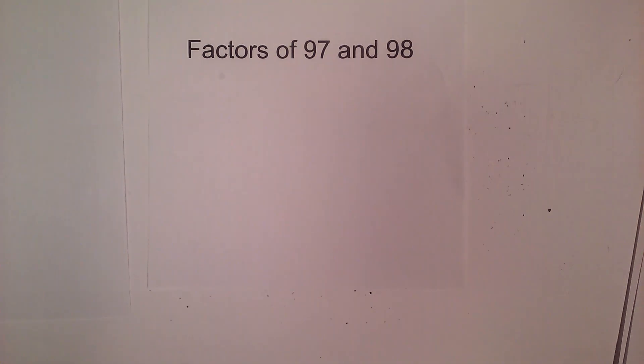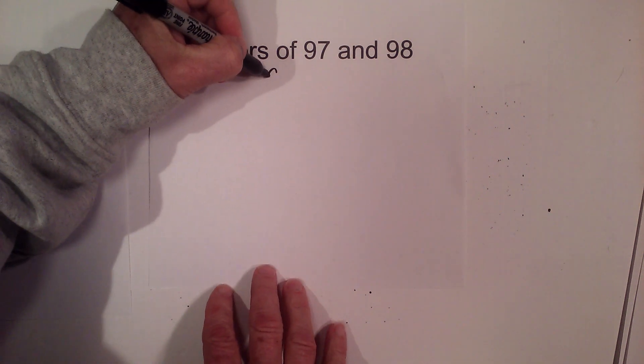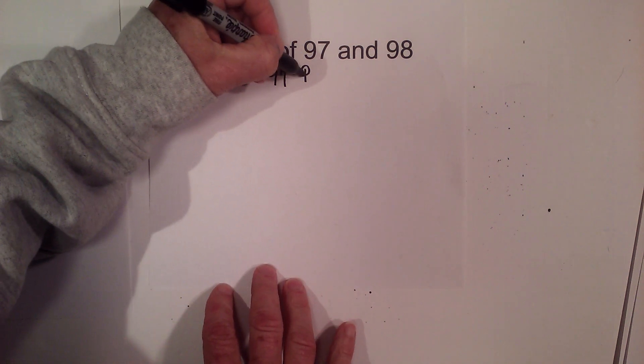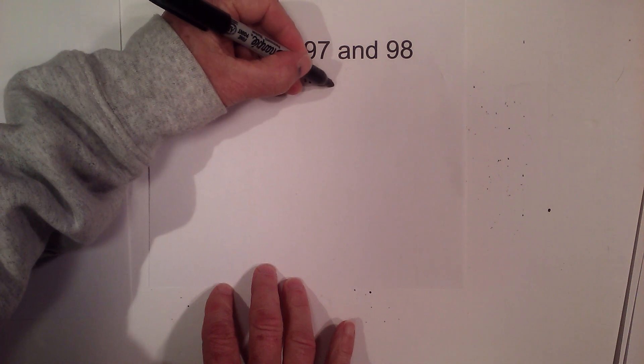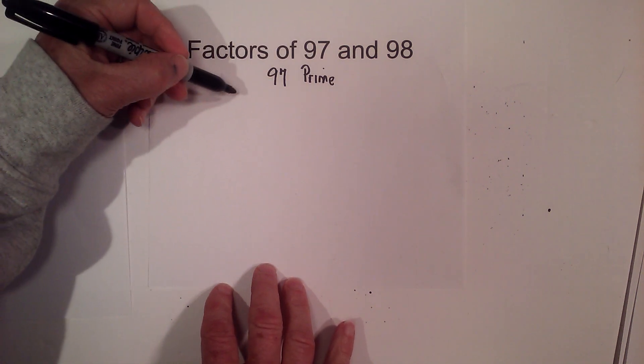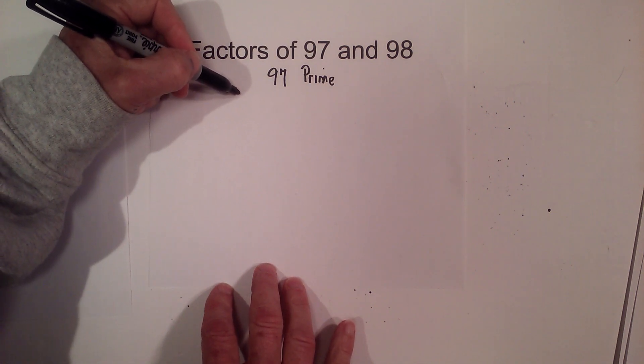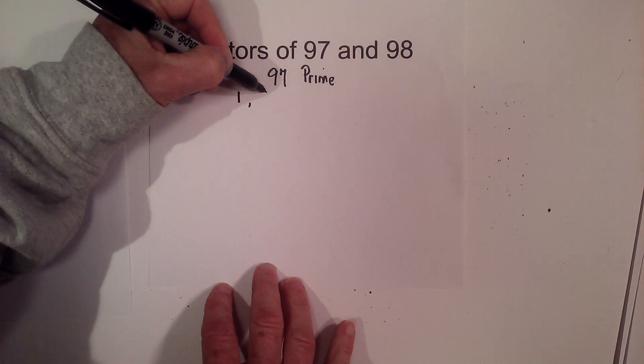The factors of 97 and 98, including the prime factors. First, 97 will be pretty easy because 97 is a prime number, so that means the only factors that multiply to equal 97 are 1 and 97.